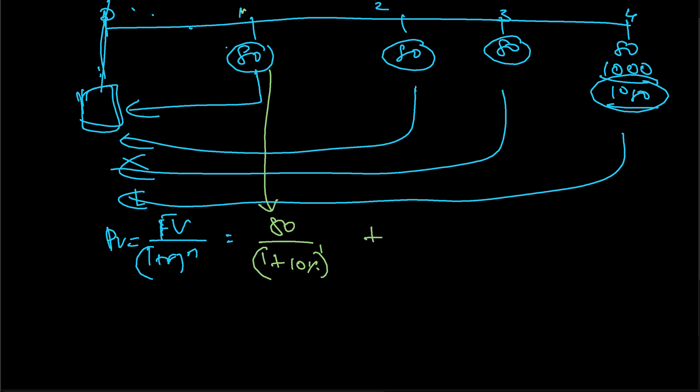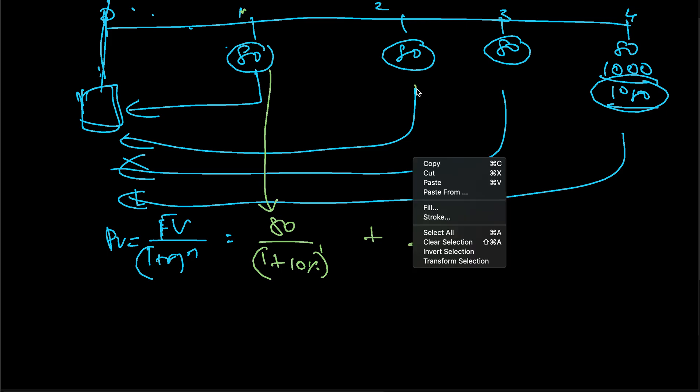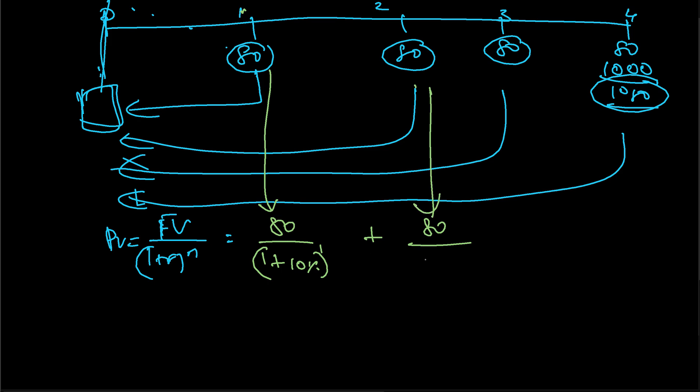Then plus, for the second one, it will be 80 divided by (1 + 10%) to the power 2, as it is for the second period.